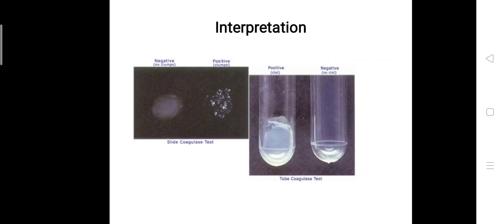It can be reported as negative. If the test sample shows clumps, it can be reported as coagulase positive, which suggests that the coagulase enzyme is present. But if you still have doubt about this negative and positive, you can always perform a confirmatory test by the tube test method.